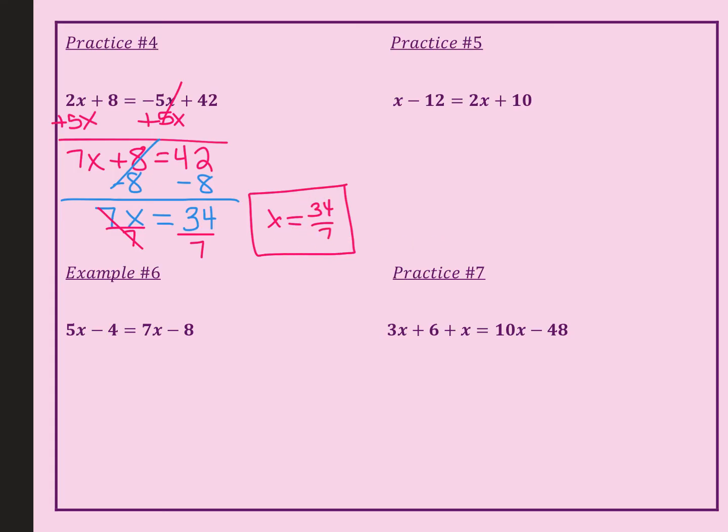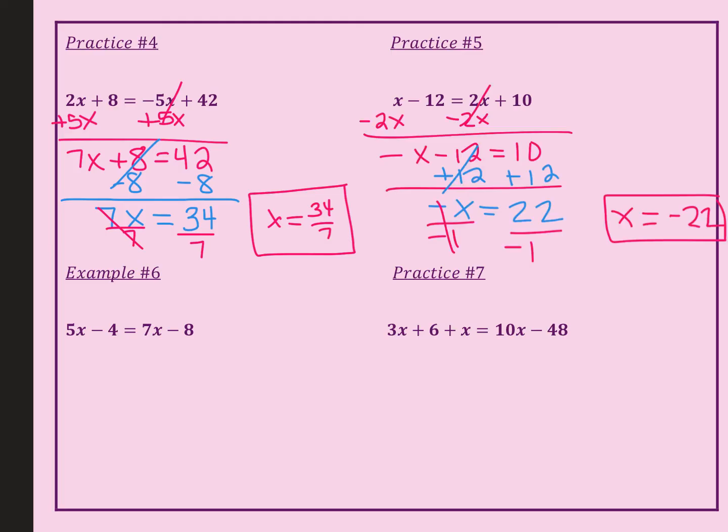Go ahead and try number five on your own. This one ended up being a negative answer. So the tricky thing here, I'm hoping you didn't make this mistake - 1 minus 2 is a -1x. You don't need the 1 there, but you can put it. But the big thing was right here at the end, I had -x = -22.